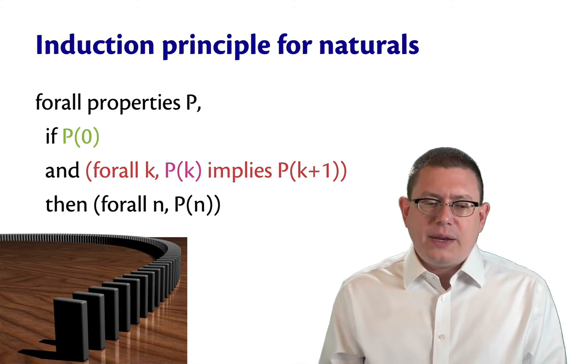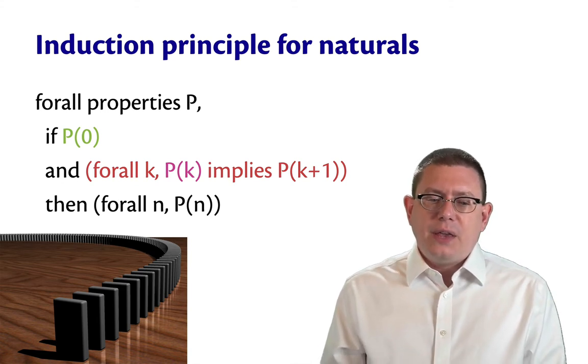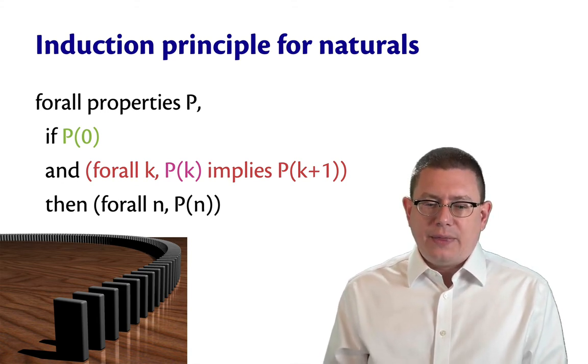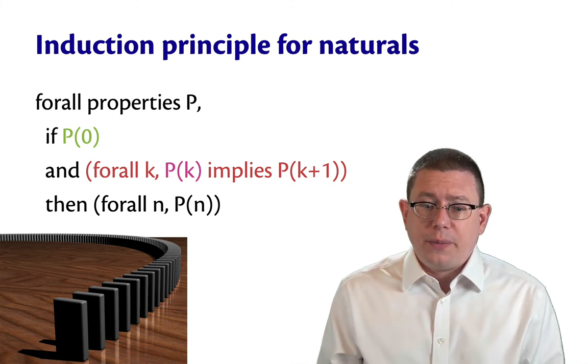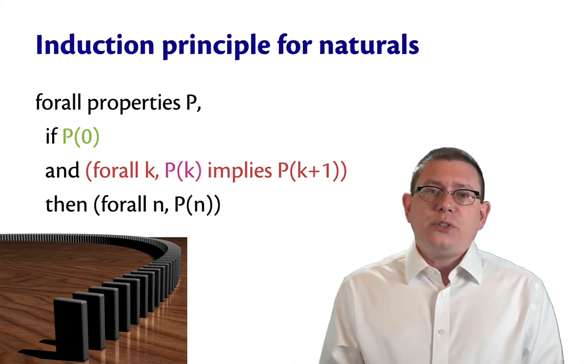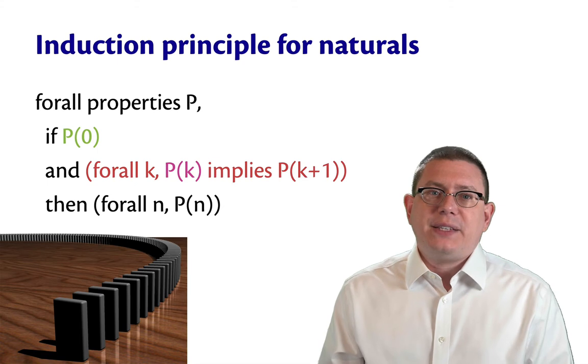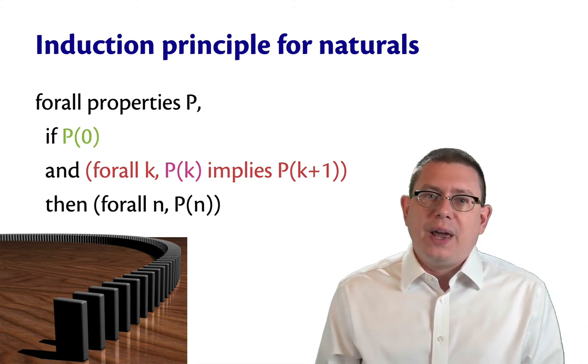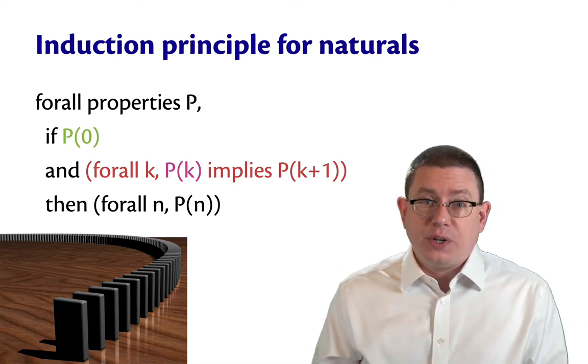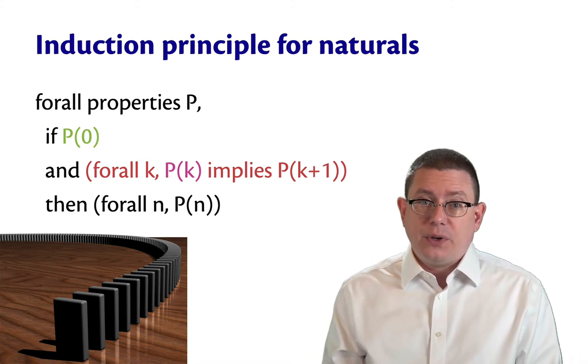And then the middle line here with the red, which says that if you can knock over domino K, then you're also able to knock over domino K+1. That's sort of saying that the dominoes are spaced and oriented in the right way. If one falls, then it will cause the next one to fall, and so forth and so on.